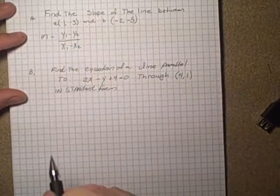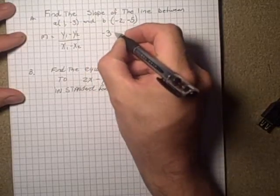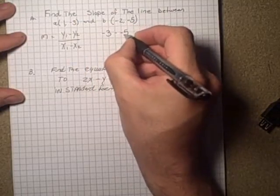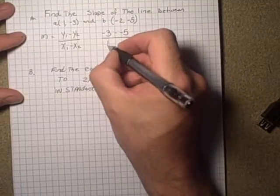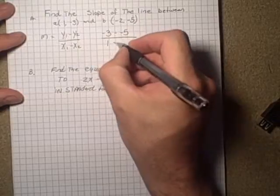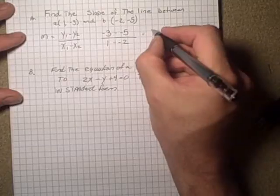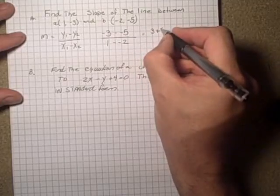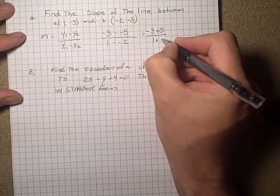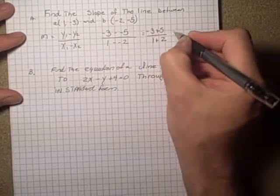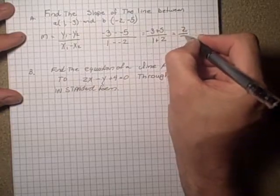I'm going to take point A as my first point. So y in that case is -3, subtract -5, over the x point is 1, subtract -2. So this would be -3 plus 5 over 1 plus 2. This gives us a slope of 2/3.